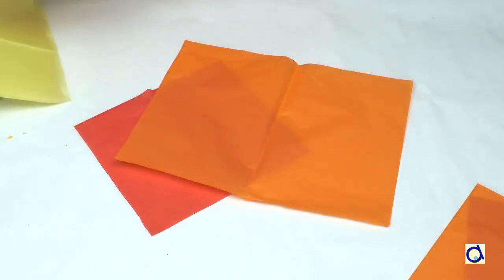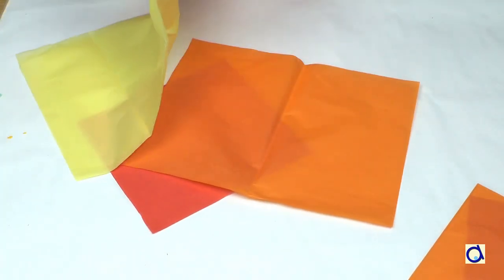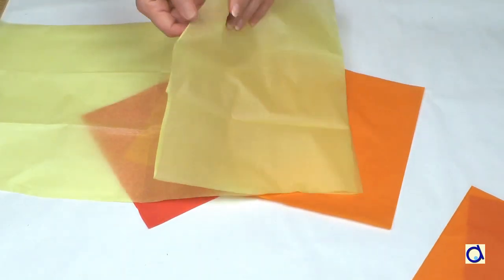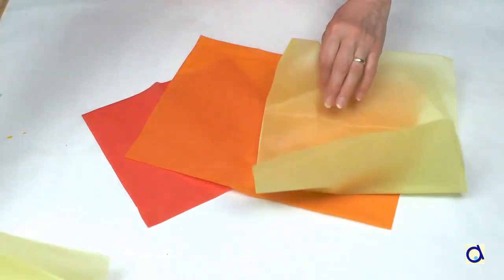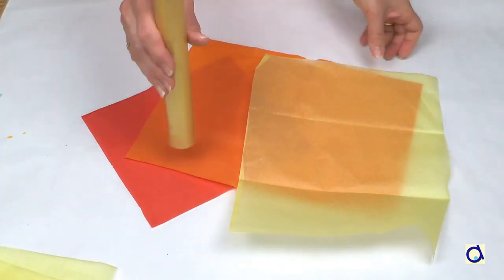Cut squares of increasing size. The red square is the smallest. Then the orange square is medium size and finally the yellow square is the biggest.